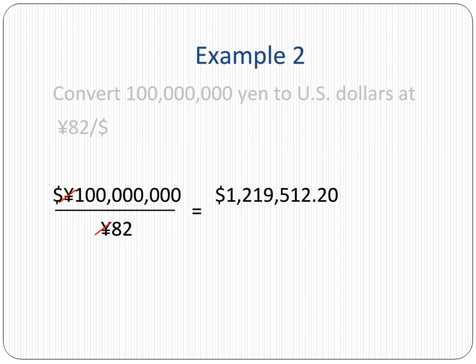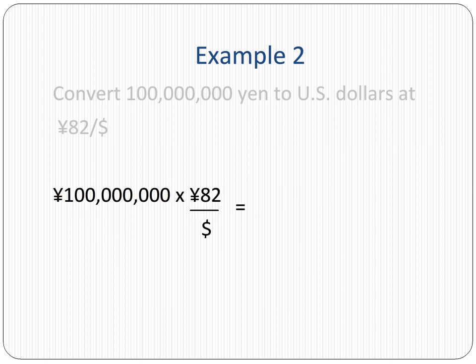Again, this was our goal, so by dividing we did the right thing. Let's check to see what would have happened if we had multiplied instead of dividing. We would have wound up with yen squared over dollar. Since there isn't such a currency code, we would have immediately recognized the mistake.